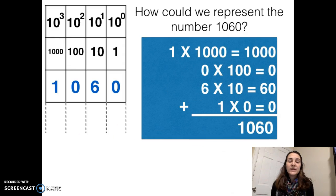If we wanted to represent an even larger number like 1,060, we would want to put a 1 in the 1,000's place to do 1 times 1,000. We wouldn't want any 100's. We would want 6 10's, and we would want 0 1's. We can do all this multiplication on the side here and add it together to get the total of 1,060.